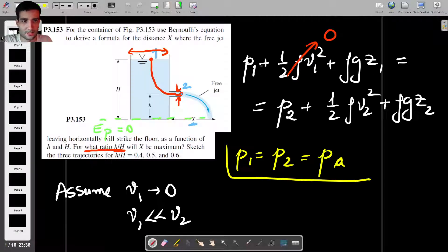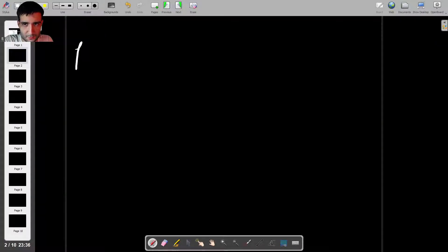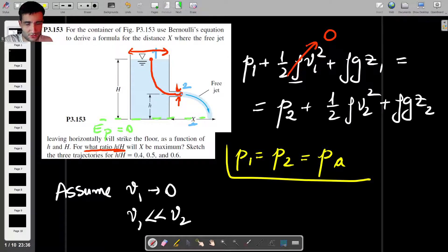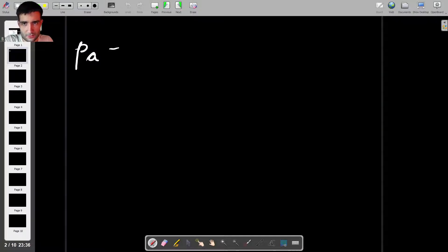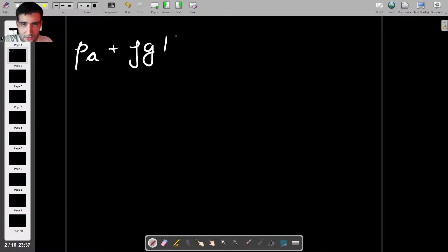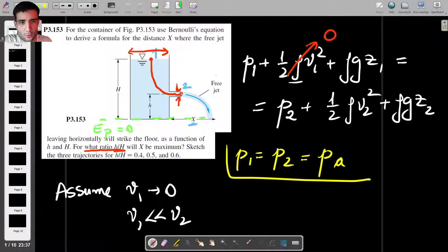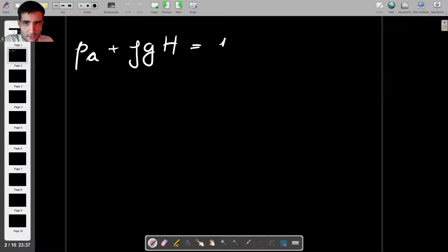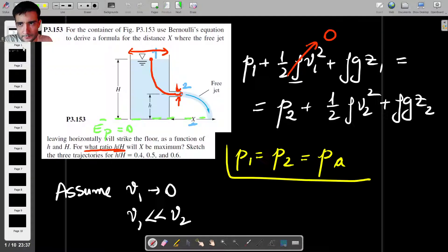With this in mind, let's actually rewrite Bernoulli's equation with everything that we have done so far. Instead of P1, I'm going to write PA, the atmospheric pressure. I'm not going to write this term because it's zero. Then plus rho G, and Z1 is the distance above the datum, which is uppercase H. This equals P2, which is again atmospheric pressure,